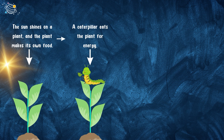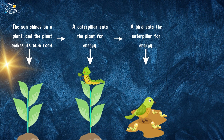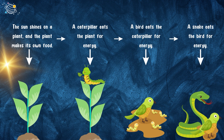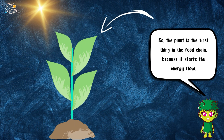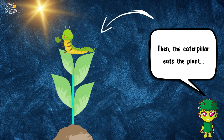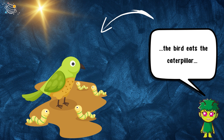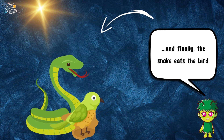A caterpillar eats the plant for energy, a bird eats the caterpillar for energy, and a snake eats the bird for energy. So the plant is the first thing in the food chain because it starts the energy flow. Then the caterpillar eats the plant, the bird eats the caterpillar, and finally the snake eats the bird.